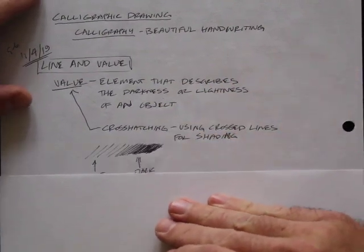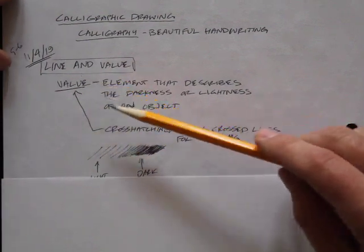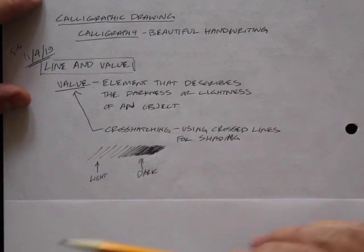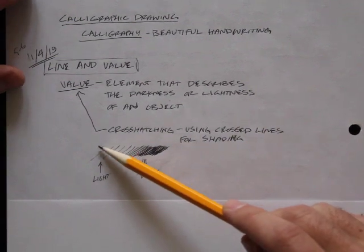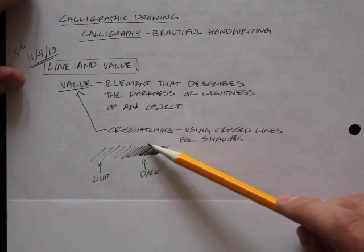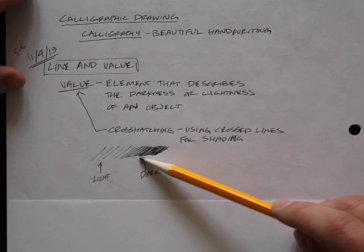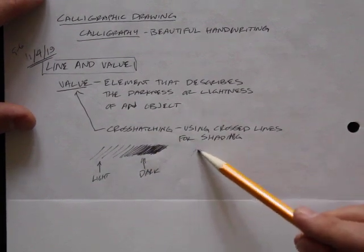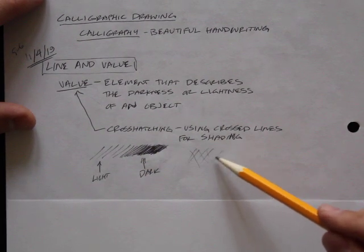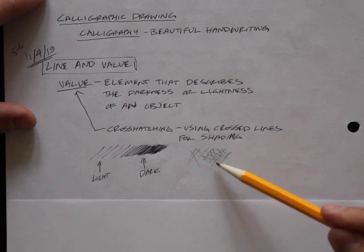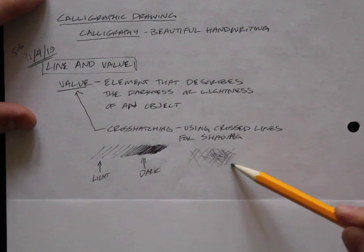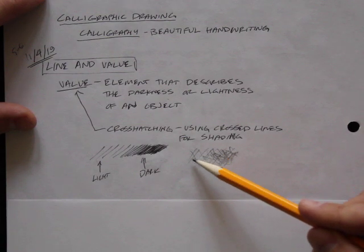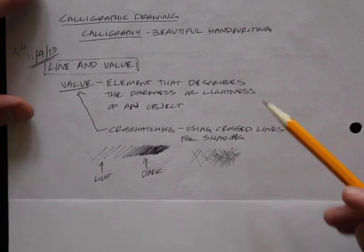We use crosshatching when we're talking about line. We use crosshatching using crosslines for shading. There's less value here where it's light and more value here where it's dark. This is just hatching, it's not crosshatching. Crosshatching would have it going back and forth, side to side. There would be light here, less value, dark here, more value.